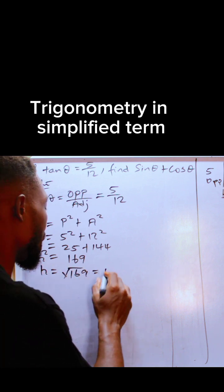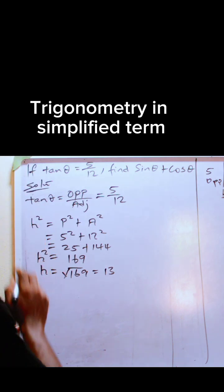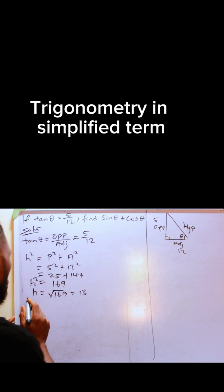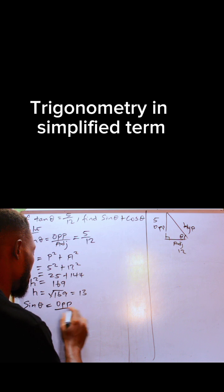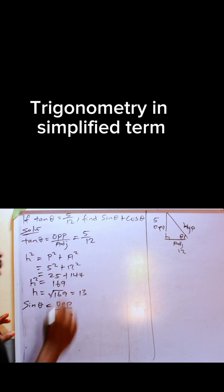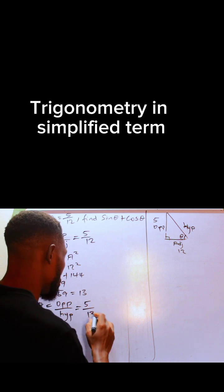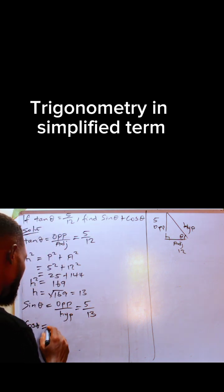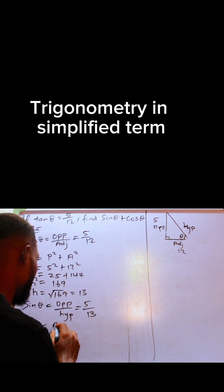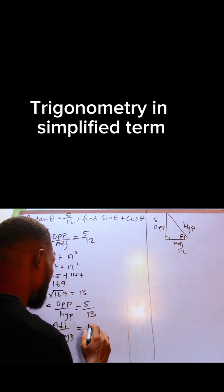That is the square of the hypotenuse, so h becomes square root of 169, and that is 13. Why did we need to find this hypotenuse? Because we know that sin θ is equal to opposite over hypotenuse, which is 5 over 13. And cos θ is adjacent over hypotenuse, which is 12 over 13.